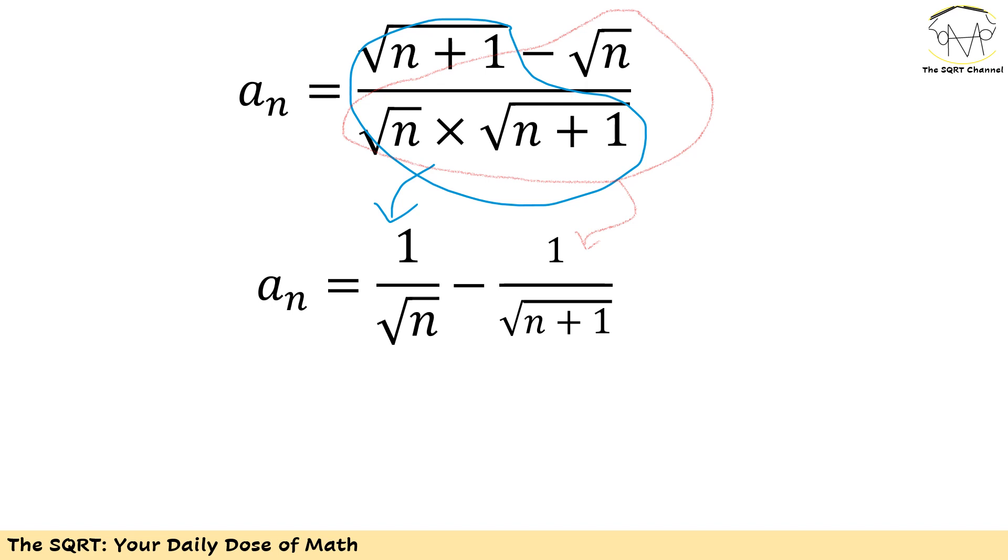For the numerator I have two terms and for the denominator I just have the multiplication of two terms. So I can divide this fraction into two fractions. For the first one I'm going to have 1/√n and then for the second term I have 1 over √(n+1). Now let's focus on this and see how we are going to solve it.